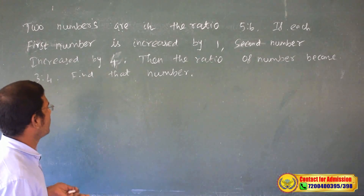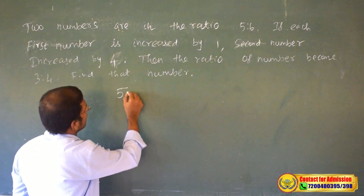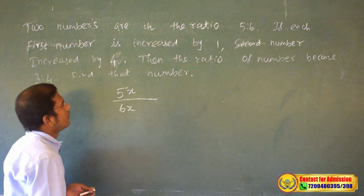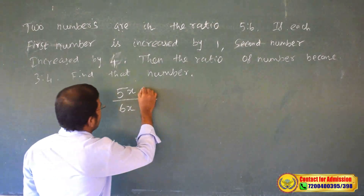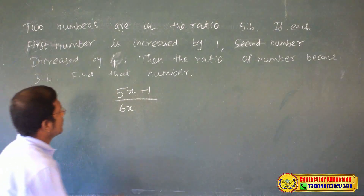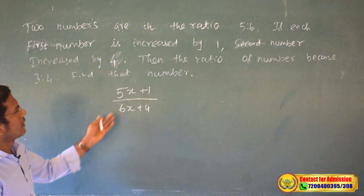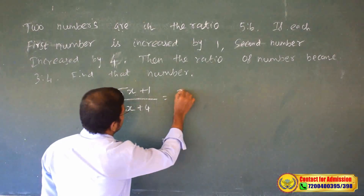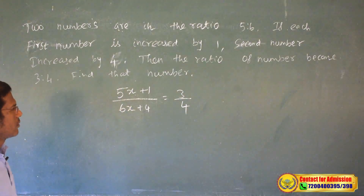Two numbers are in the ratio of 5 to 6, so let them be 5x and 6x. The first number is increased by 1 and the second number is increased by 4, and the new ratio is 3 to 4.